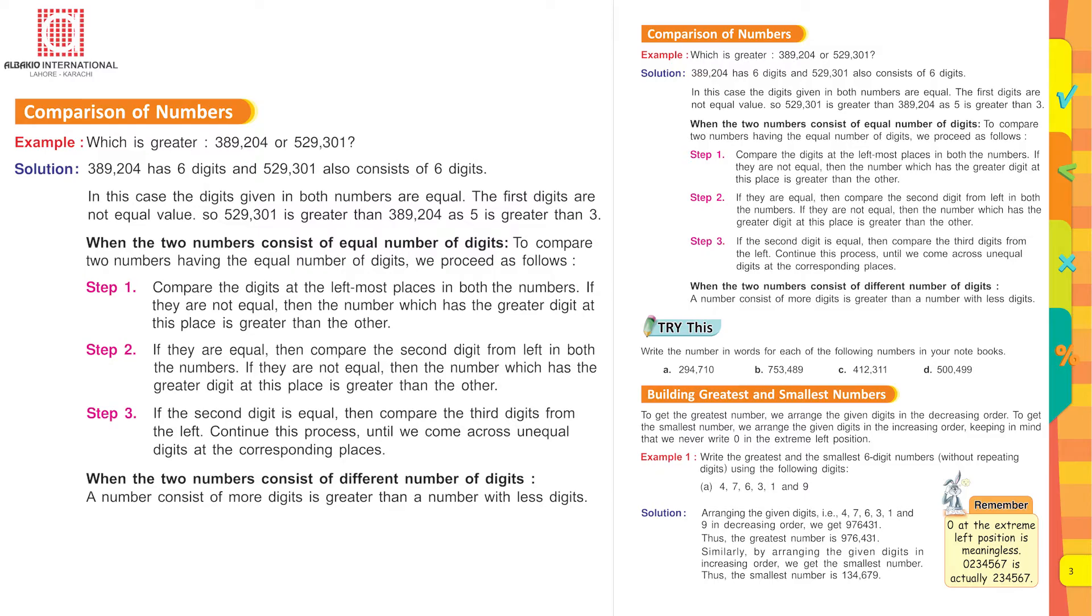Now in this case if we compare the left most digit, in the first set it is 3 and in the second it is 5. So the first one is 300,000 and the other one is 500,000. Now which one is greater? Yes of course 500,000 is greater. Or in other words 389,204 is smaller than 529,301.